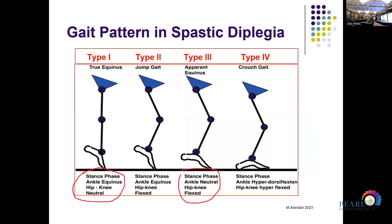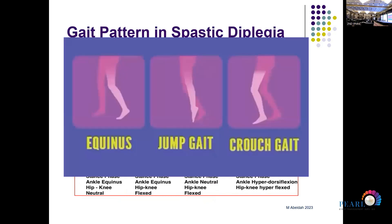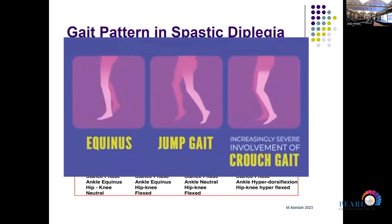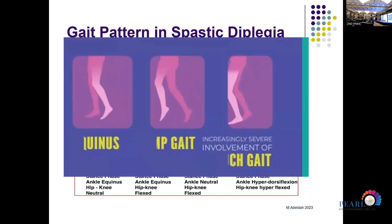Another classification helps us understand gait in diplegia, with four types ranging from true equinus to crouch gait. In true equinus, both knee and hip are in a neutral position. In type four, the crouch gait, both hip and knee are flexed while the ankle is in a neutral position. There is a natural progression from equinus to crouch gait seen in many children in our clinic, sometimes related to lack of regular follow-up or delayed early intervention.